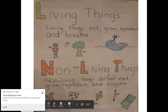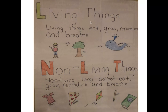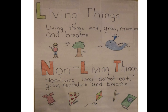I made this little anchor chart that we're going to go through together before we read our story. It says living things. Living things eat, grow, reproduce — which means that they have babies or they lay eggs — and breathe. Some examples I drew were a boy, birds, trees, and whales. These are all examples of living things.